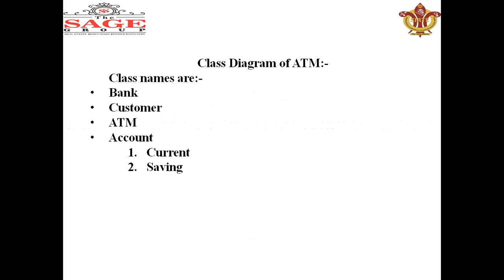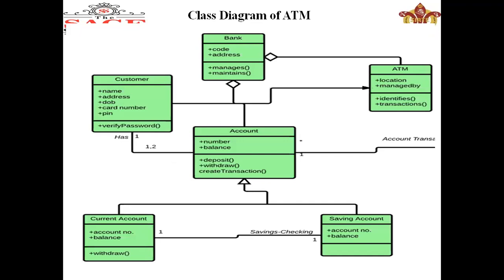For example, we will make a class diagram of an ATM system. You have to make a bank class, a customer class, a diagram of ATM, and an account class which has two subclasses — making six classes in total. You need to identify the attributes and operations for these classes. We make a bank class, customer class, and account class. The account class has two subclasses: current account class and saving account class.